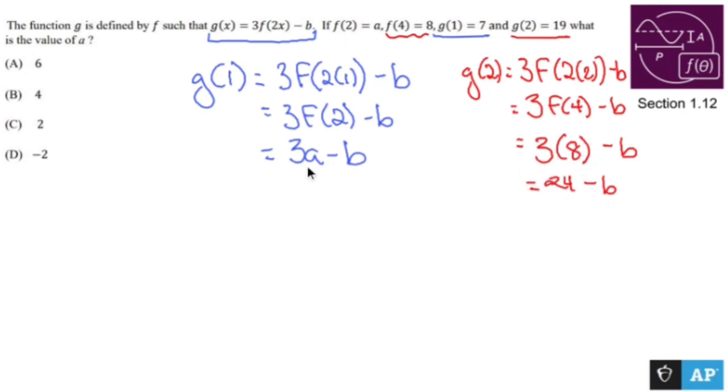I know that g of 2 is also 19. I also know that g of 1 is 7. So what I can do is I can solve both of these equations and see what I come up with. Well, first off,